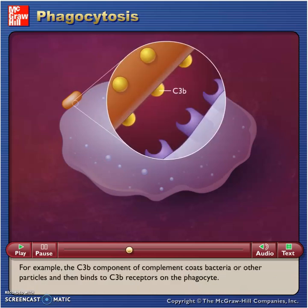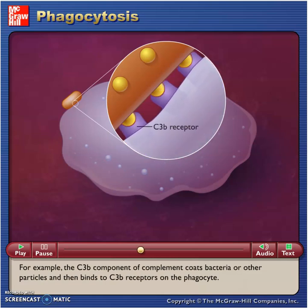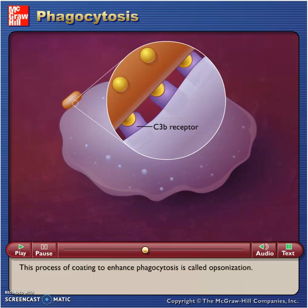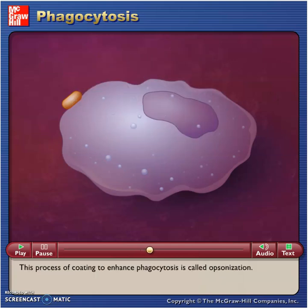For example, the C3B component of complement coats bacteria or other particles and then binds to C3B receptors on the phagocyte. This process of coating to enhance phagocytosis is called opsonization.